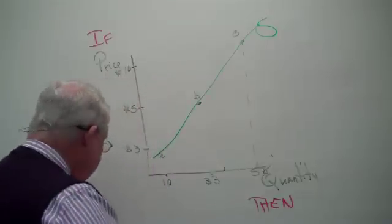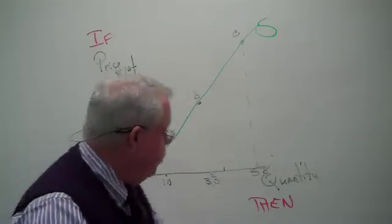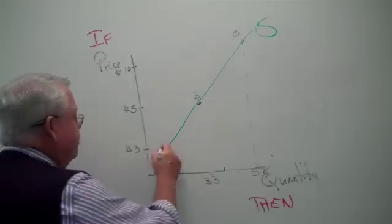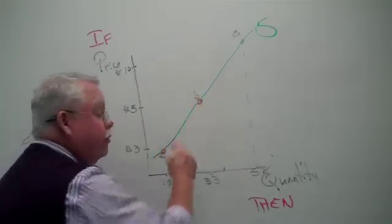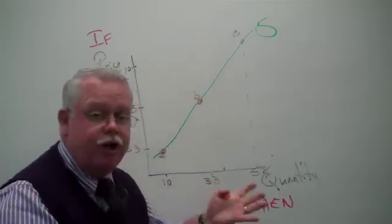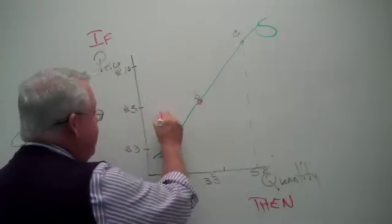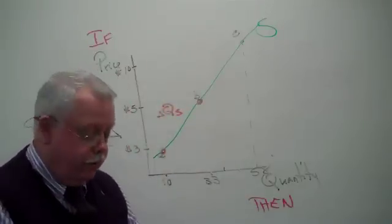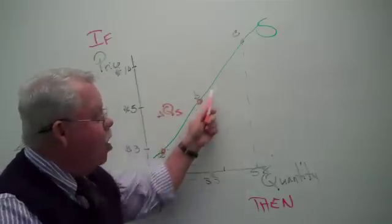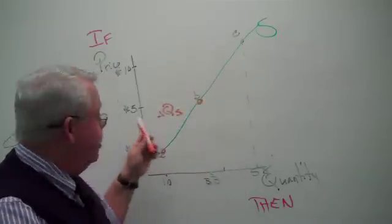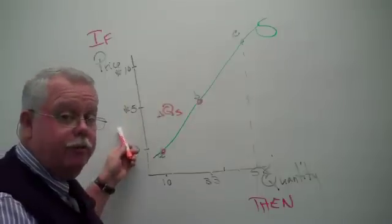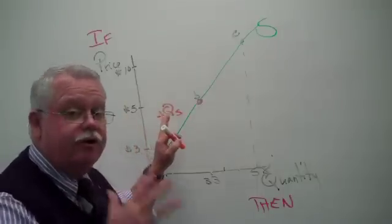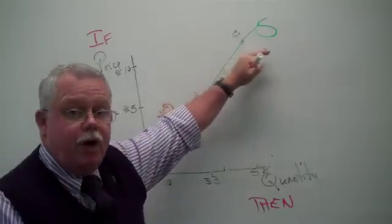Now, when we put all this together, by the way, and we move along the supply curve from one point to another point on the supply curve, that is not a change in supply. That's a change in the quantity supplied, the quantity offered for sale. When you move along the supply curve, it's because the price changed. And that's not a change in supply. It's a change in the quantity supplied.